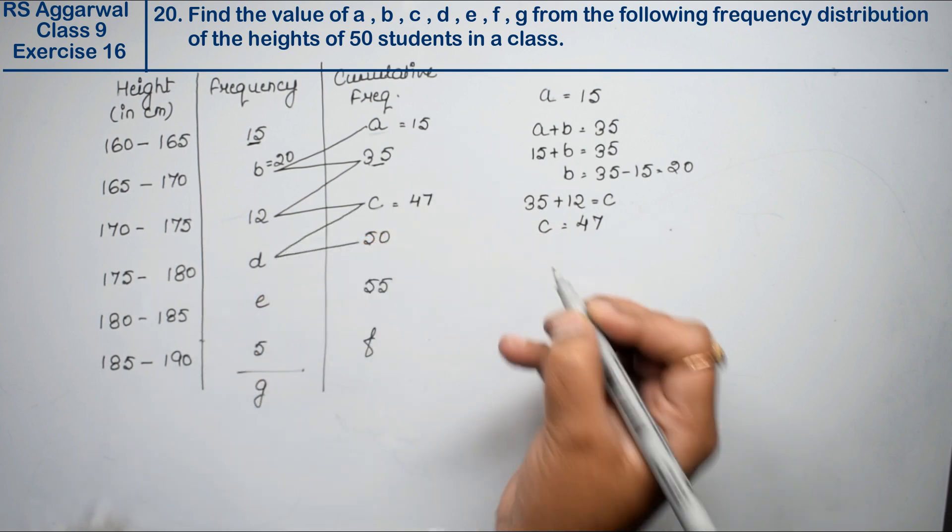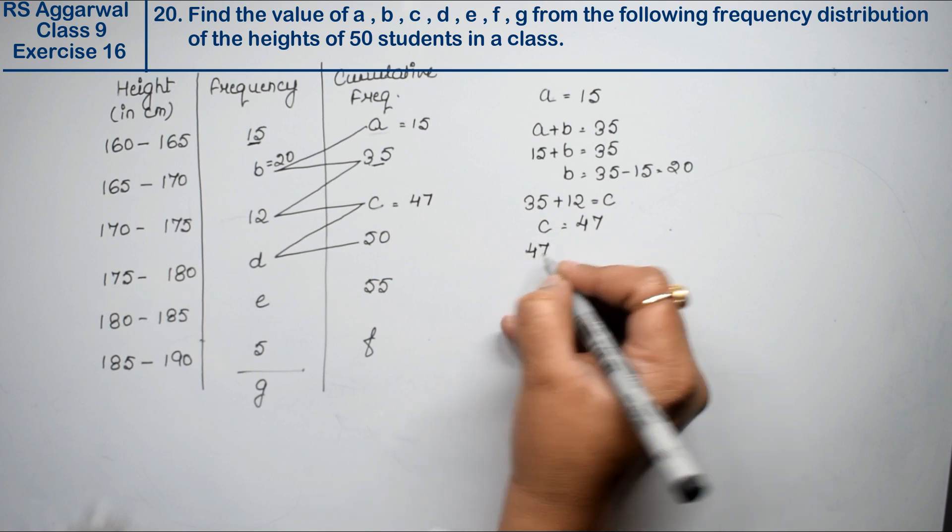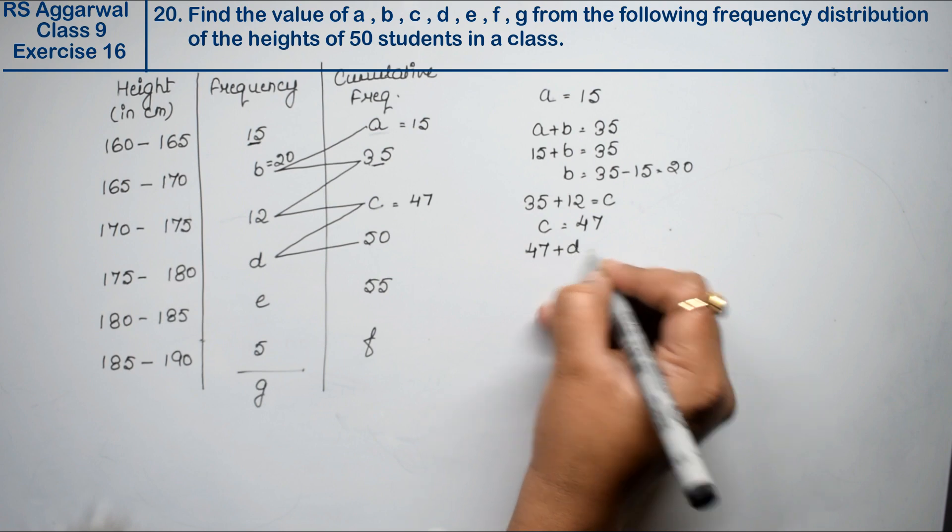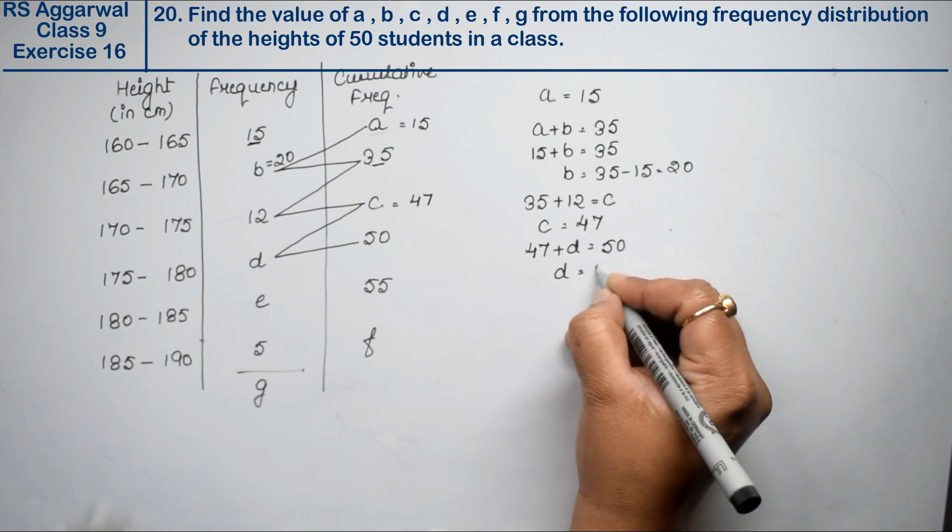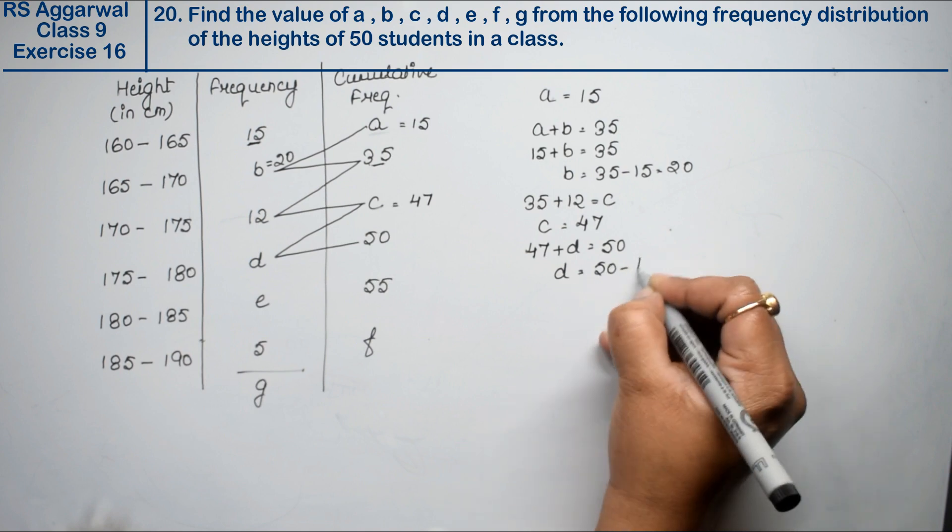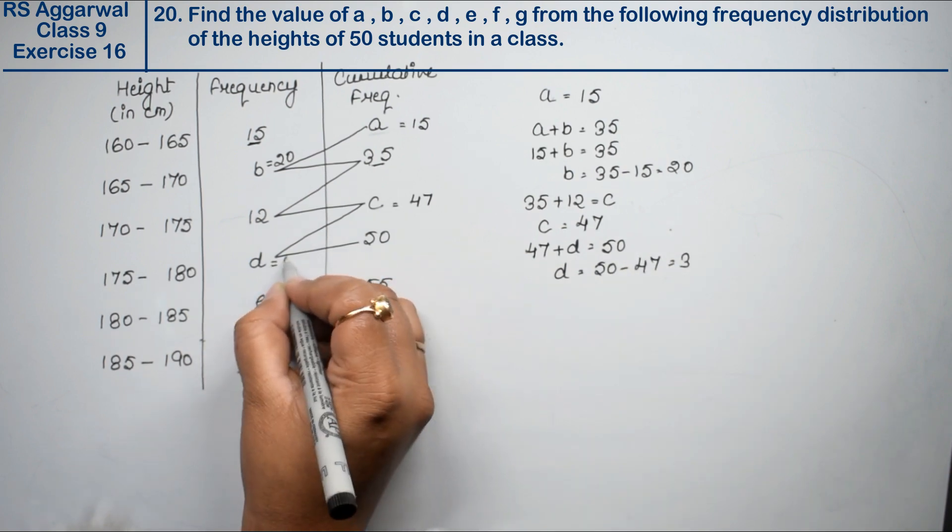I have to add them. Now what will I add? 47 plus D. Here, 47 plus D equals to 50. So D value is how much? 50 minus 47, that is 3. So D value is 3.